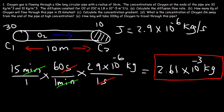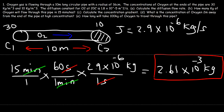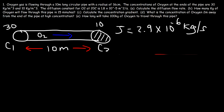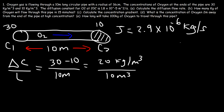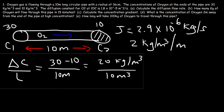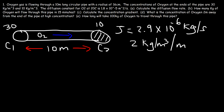That's a very small amount. Converting to grams by multiplying by 1000 gives 2.61 grams. For Part C, we calculate the concentration gradient, which is the change in concentration divided by the length: C1 minus C2 over the pipe length, so 30 minus 10 equals 20 kilograms per cubic meter, divided by 10 meters. The result is 2 kilograms per cubic meter per meter — meaning the concentration changes by 2 kg/m³ for every meter along the pipe.